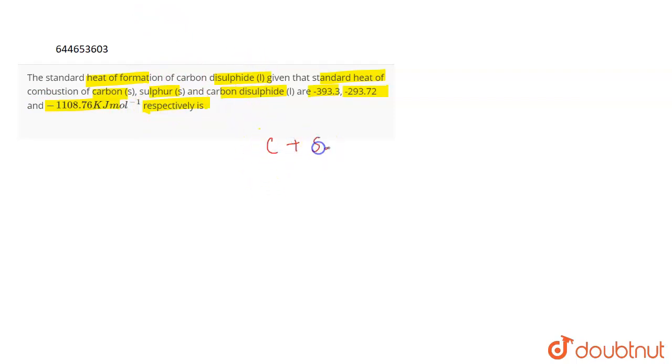The carbon disulfide formation takes place like C plus S2 giving CS2. This is how the formation of carbon disulfide takes place. So if you have to find out the delta H formation, that can be calculated as the enthalpy of product minus the enthalpy of reactant.